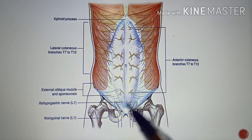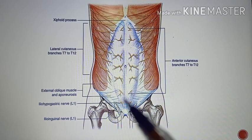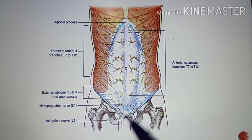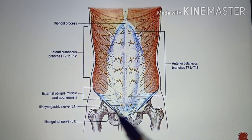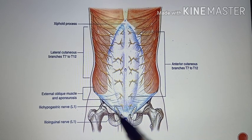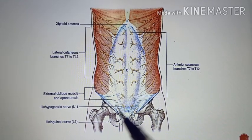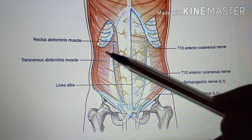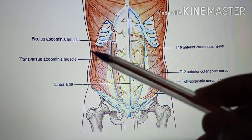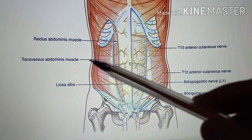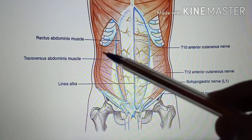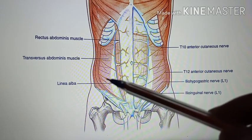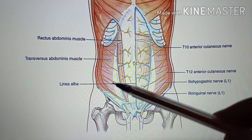The first lumbar nerve has two divisions: the iliohypogastric nerve and the ilioinguinal nerve. In this diagram you can see three muscles. The outermost is the external oblique muscle, which is cut. Then there is the internal oblique muscle, also cut, and the transverse abdominus muscle.